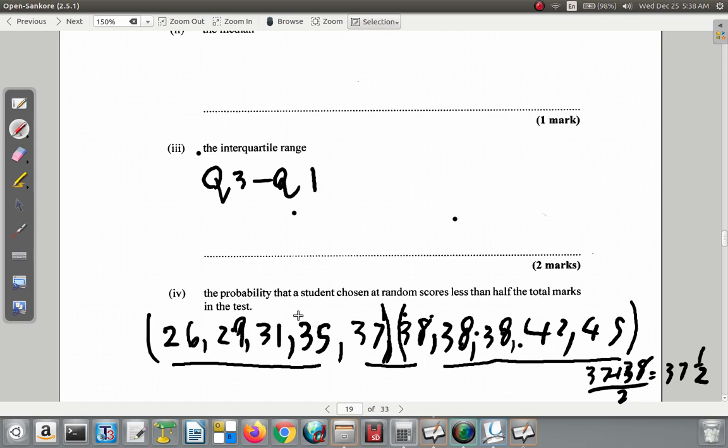So we see which number is in the middle of the lower 50%. I have 1, 2, 3, 4, 5 of them.